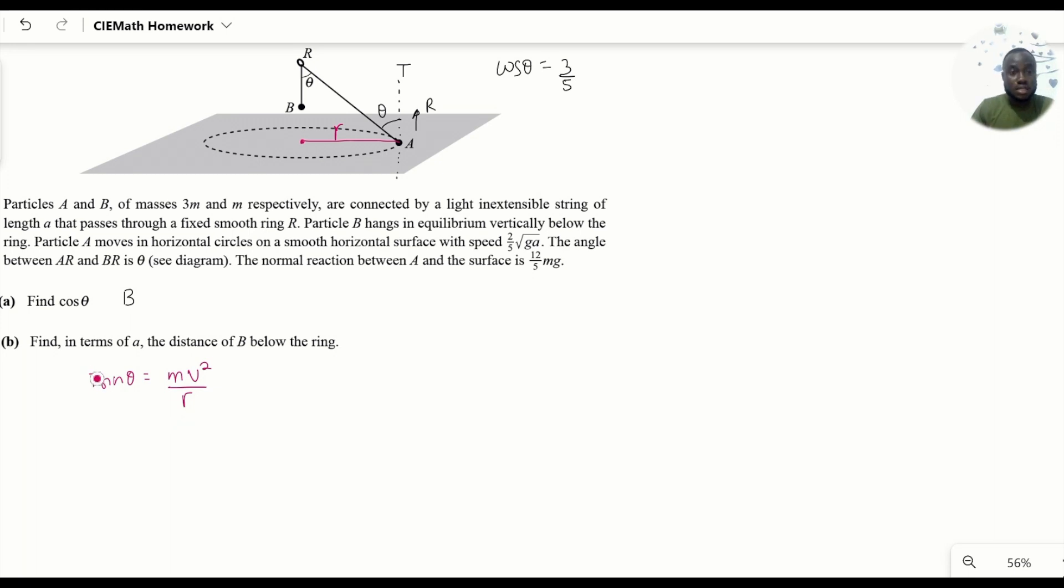We know the value of T is mg, we know sine θ is 4/5, the mass of A we're given, and the velocity of A we know as well. The only thing we need to figure out is the value of r. Let's calculate r by making it the subject. The mg cancels out with this mg, and everything simplifies to (15/4)ℓ. That's the value of r.